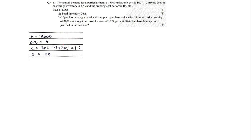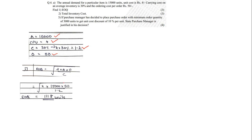Data: annual demand = 15,000, CPU = 4 rupees, carrying cost = 30% of 4 = 1.2 rupees, ordering cost = 50 rupees. EOQ = square root of (2 into 15,000 into 50 divided by 1.2). Substituting and taking the square root gives EOQ = 1118 units (rounded up, since units cannot be in decimals).